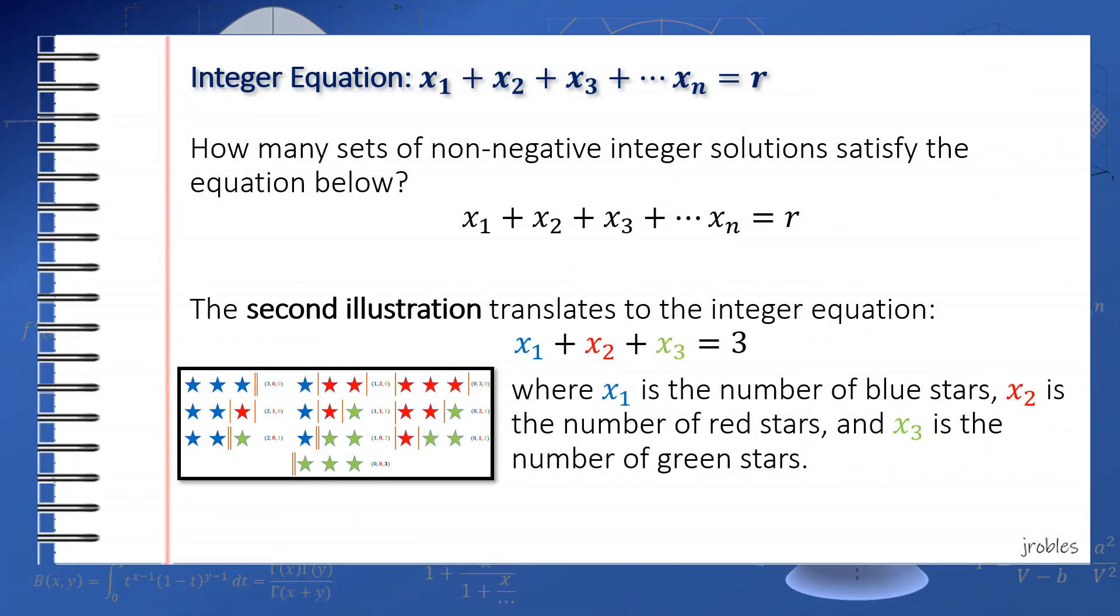Similarly, the second illustration translates to the integer equation x_1 + x_2 + x_3 = 3, where the new variable x_3 represents the number of green stars.